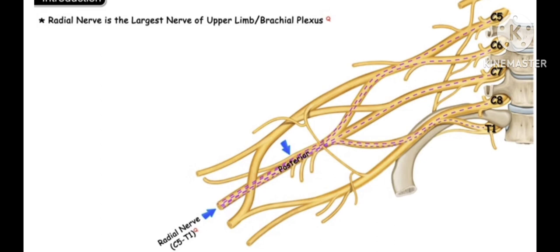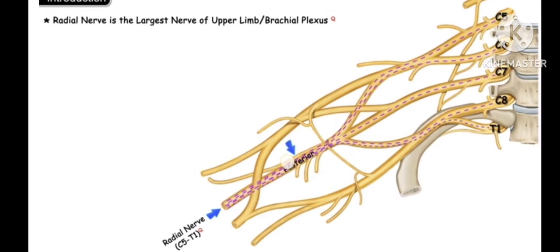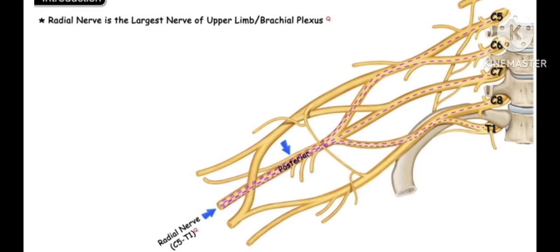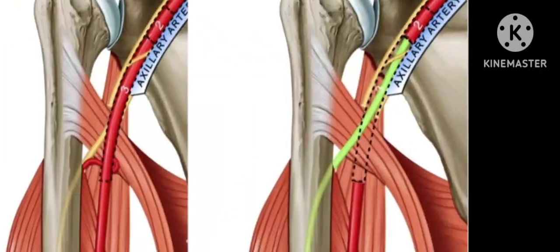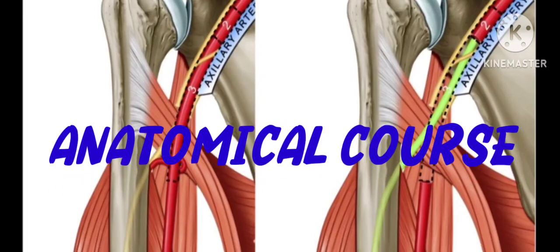The radial nerve root is C5, C6, C7, C8, and T1. It is the largest nerve of the upper limb.